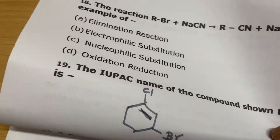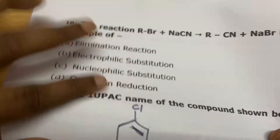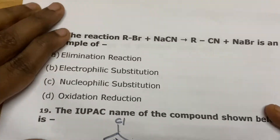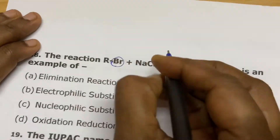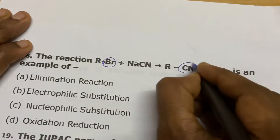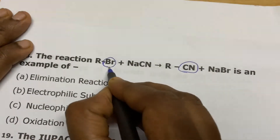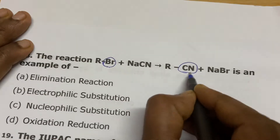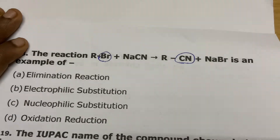The reaction RBr + NaCN gives RCN + NaBr. Here, Br is replaced with CN — or we can say Br is substituted with CN. This is a substitution reaction. But how do we know whether it is nucleophilic or electrophilic substitution?